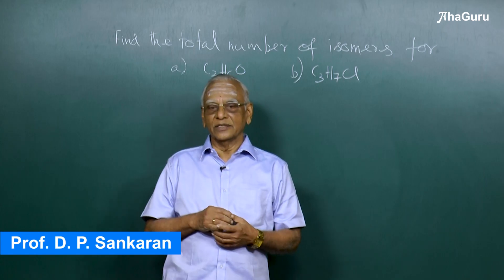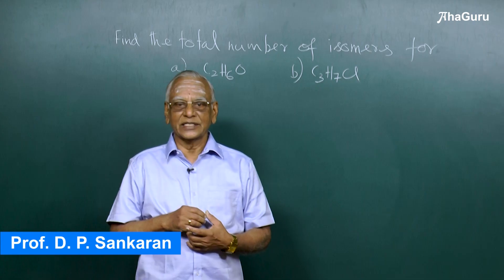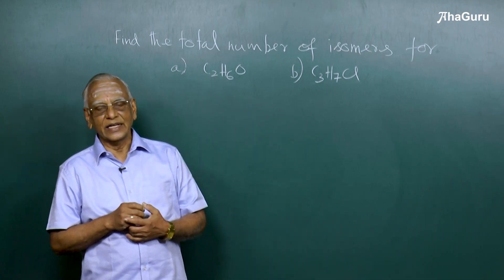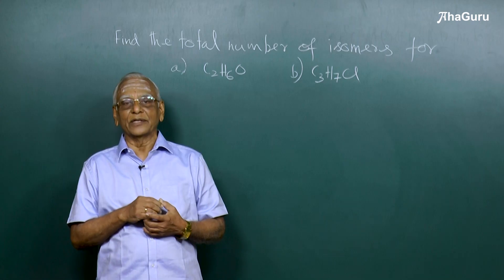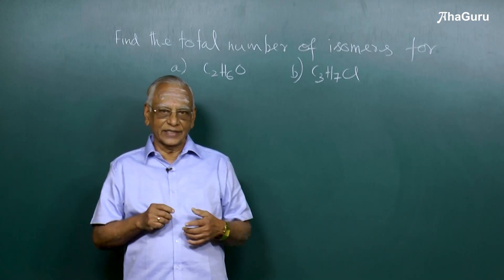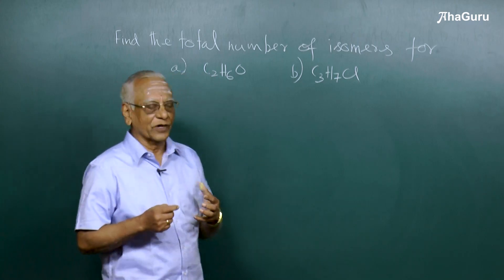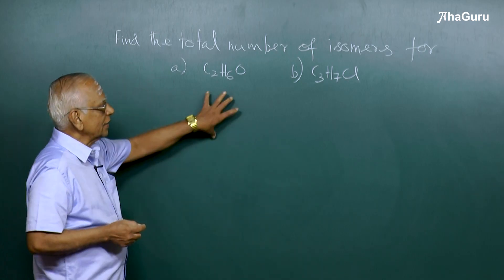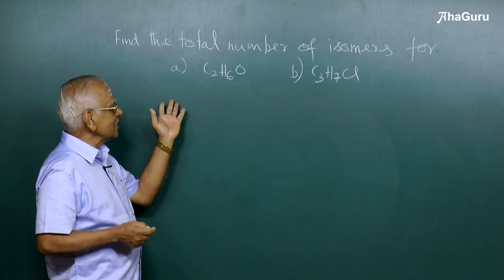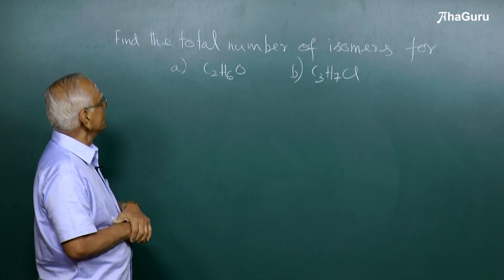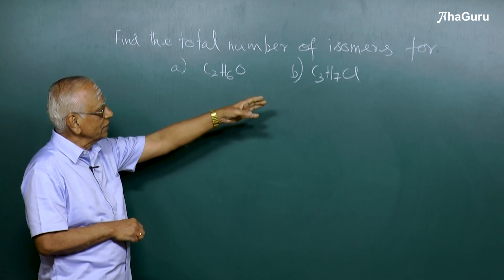My dear students, in this video we shall see some basic concepts of isomerism. Isomerism is a phenomenon where different molecules have the same molecular formula exhibiting different structural formulas. I am going to explain structural isomerism, the first part of isomerism. I have given two examples on the board: one is C2H6O, the other one C3H7Cl.